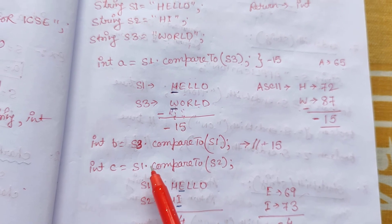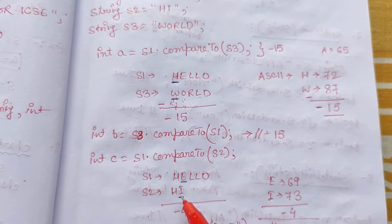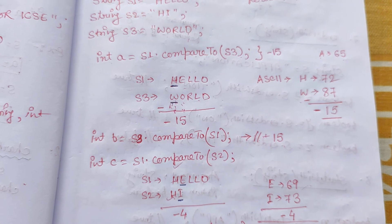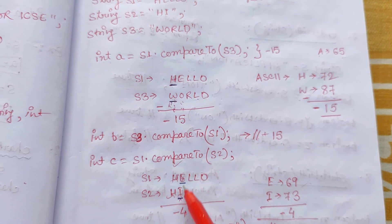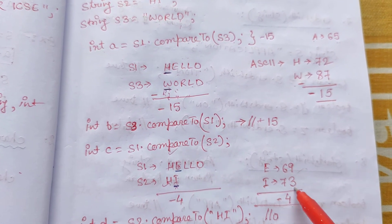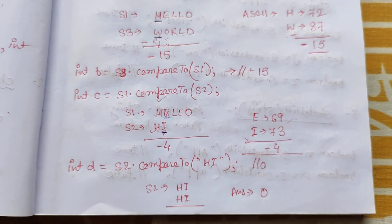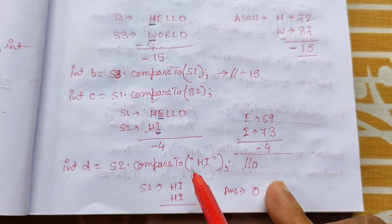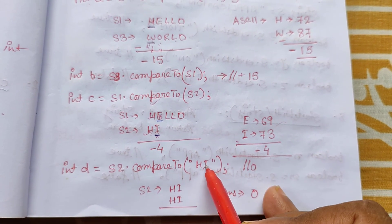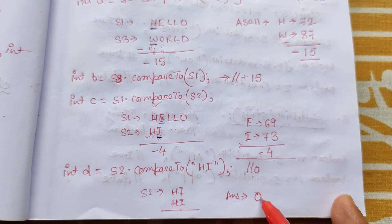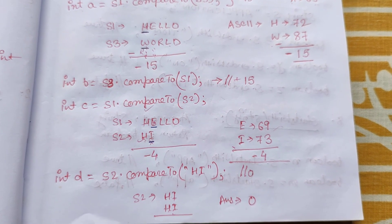int c = s1.compareTo(s2): compare 'hello' and 'hi'. First characters 'h' and 'h' match, so we move to the next. 'e' and 'i' don't match. ASCII of 'e' is 69, ASCII of 'i' is 73. So 69 - 73 = -4. Answer is -4. If we compare two identical strings, like s2.compareTo(s2) where both are "hi", all characters match and the result is 0. That is our compareTo() function. That is the first part of this video; in the second part we will do more functions.